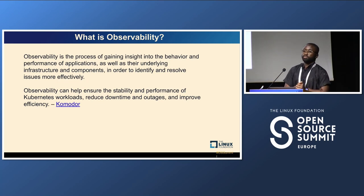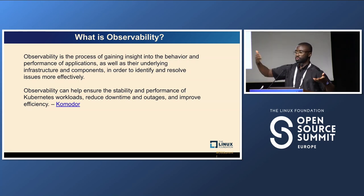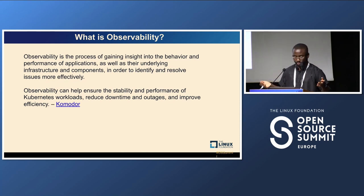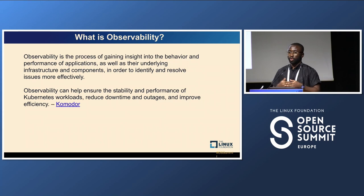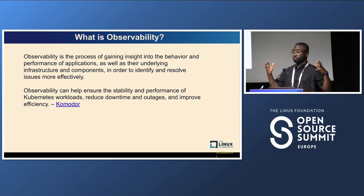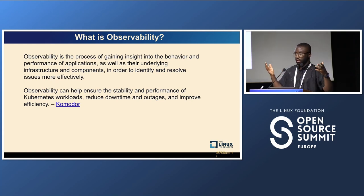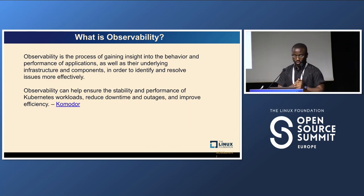So what is observability? The English word 'observe' — observability is basically to know what's going on. It's the process of gaining insight on your application, its behavior, its performance, in order to identify and resolve issues. A bird's eye view, in order to make the system more efficient and to diagnose and resolve issues. In Kubernetes, this ensures the stability of workloads. The cluster system has pods, nodes — several moving parts — so that's the essence of observability.